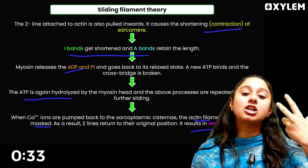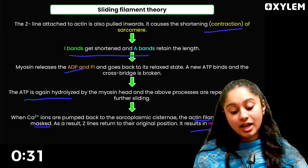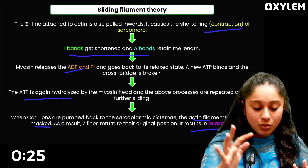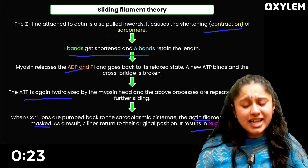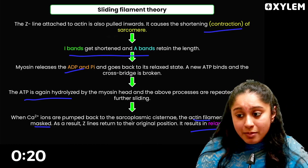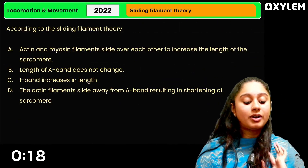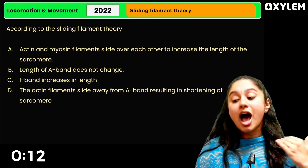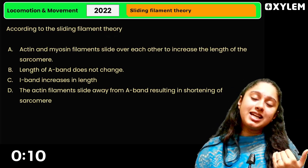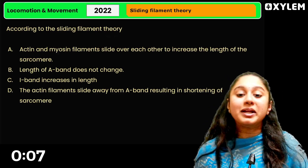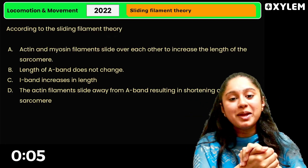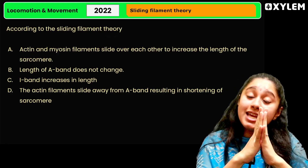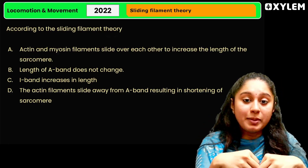This is the muscular contraction as explained by the sliding filament theory. This is a very important concept for NEET, as section questions have come from here. I have a PYQ from 2022: according to sliding filament theory, four statements are made — which statement is correct? Please comment your answer in the comments.